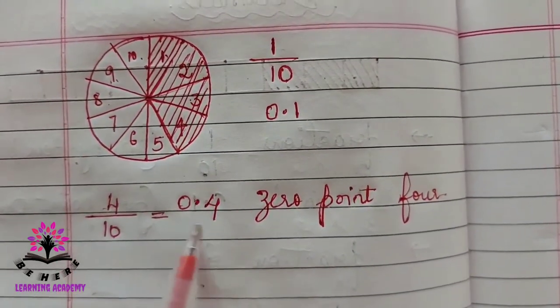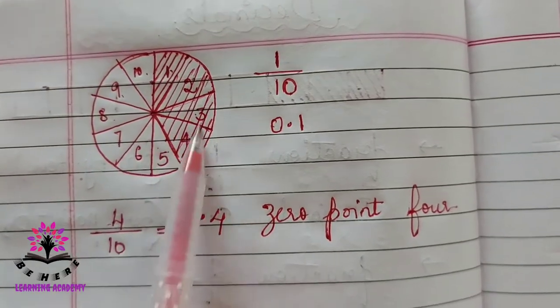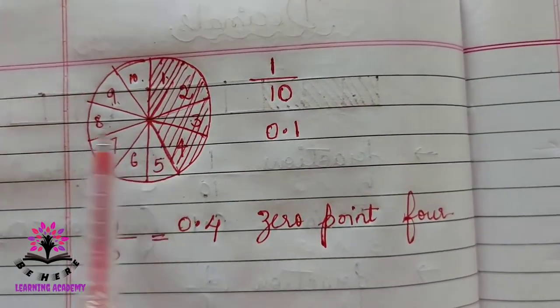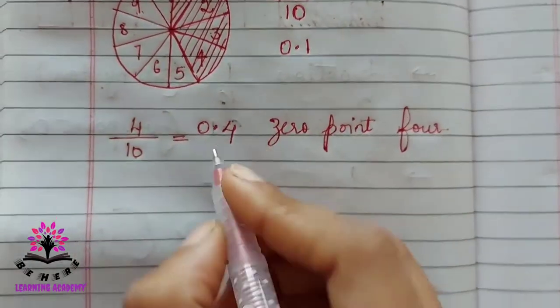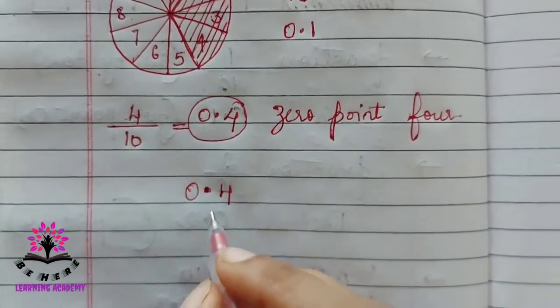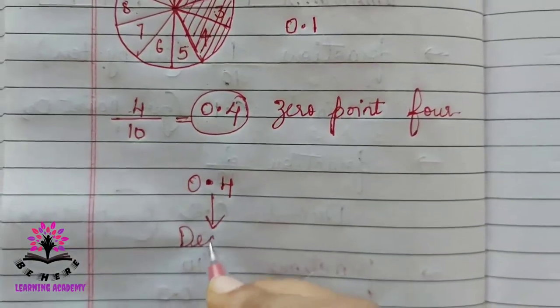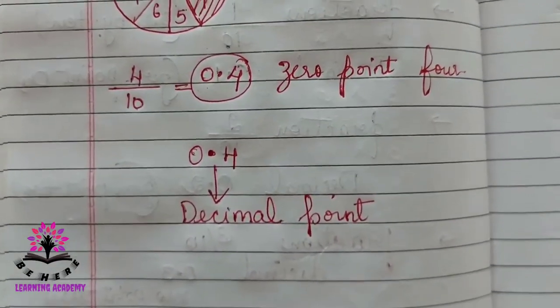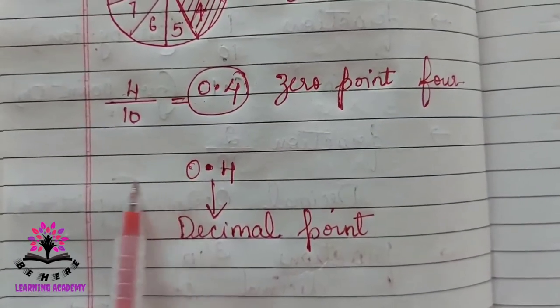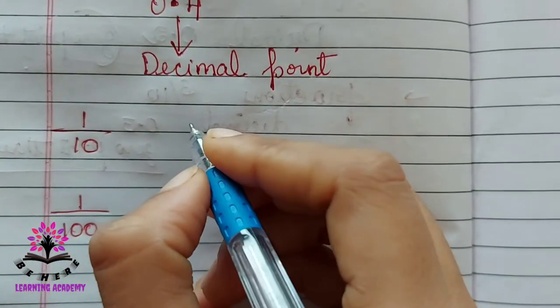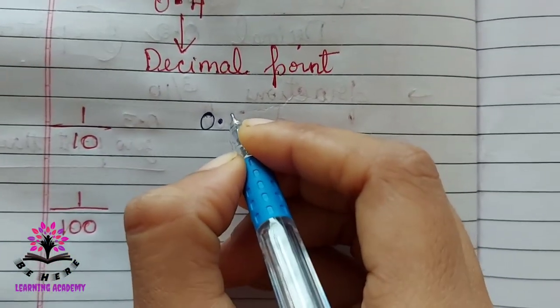To express a number in decimal, the whole part must be divided into ten equal parts. Remember this. Here 0.4 is the decimal. We call this point the decimal point. The numbers towards this side are integers and this side are decimals. Now, 1/10 — how are you writing in decimals? You are writing it as 0.1.